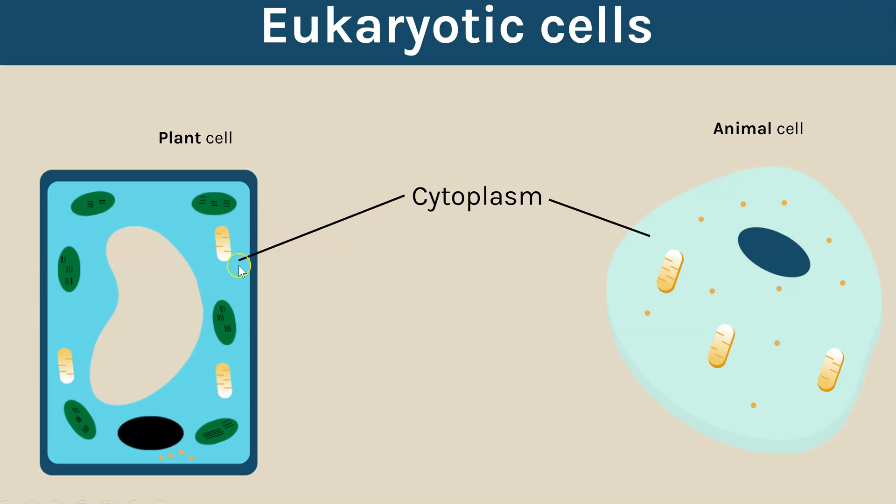Some of the key structures inside a eukaryotic cell are they have cytoplasm, they have a cell membrane and they have genetic material that is within a nucleus rather than loose in the cytoplasm.